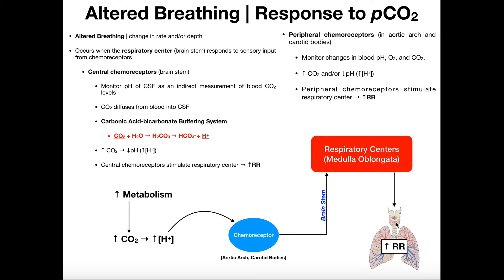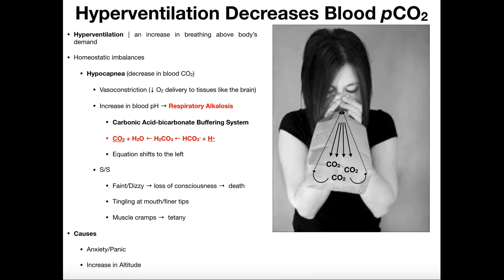When the blood becomes acidic, both the central and peripheral chemoreceptors tell the lungs to increase the rate and depth of breathing to eliminate that carbon dioxide. That's what happens when you go out and exercise. It's something you don't have to think about — it's a normal response, and that's altered breathing. It has to happen to rid the body of excess carbon dioxide. But we can also have a couple of homeostatic imbalances: hyperventilation and hypoventilation. These are responses not to changes in CO2 levels, but are signs of something else.